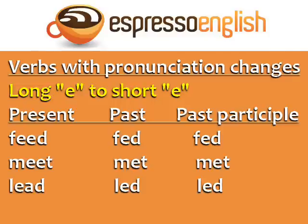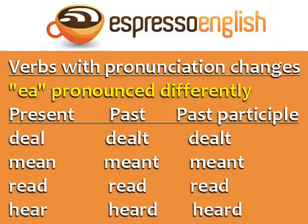Another group has EA pronounced differently from the present to the past and past participle: deal, dealt, dealt; mean, meant, meant; read, read, read; hear, heard, heard.